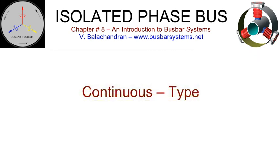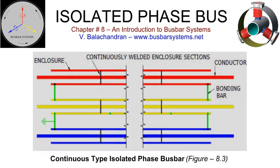In the continuous type isolated phase bus, each of the phases of the entire length is sectionalized into smaller convenient lengths for transportation and ease of installation. The adjacent sections are welded to form a continuous enclosure from one end to another. The ends of the enclosure of each phase are shorted together, and the entire configuration is then earthed at one end, normally at the generator end. In this system, the current in one phase induces a voltage along the length of its enclosure, and a return path is available at either end. This circulating current, which is almost equal in magnitude and almost opposite in direction, produces a magnetic field that is almost equal and opposite to that produced by the conductor, resulting in very effective shielding.